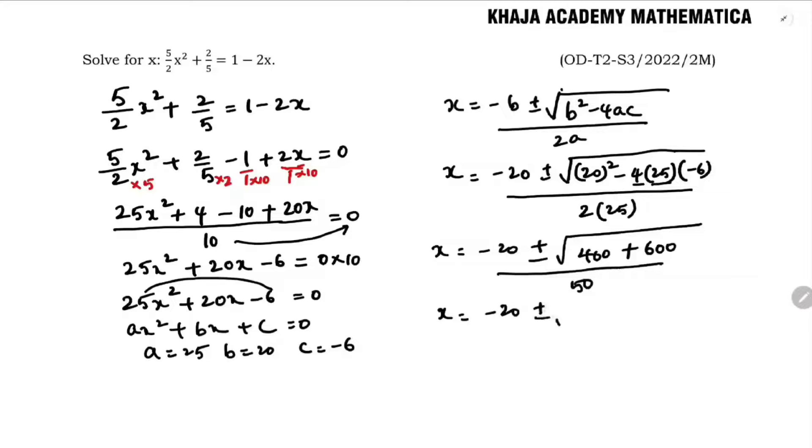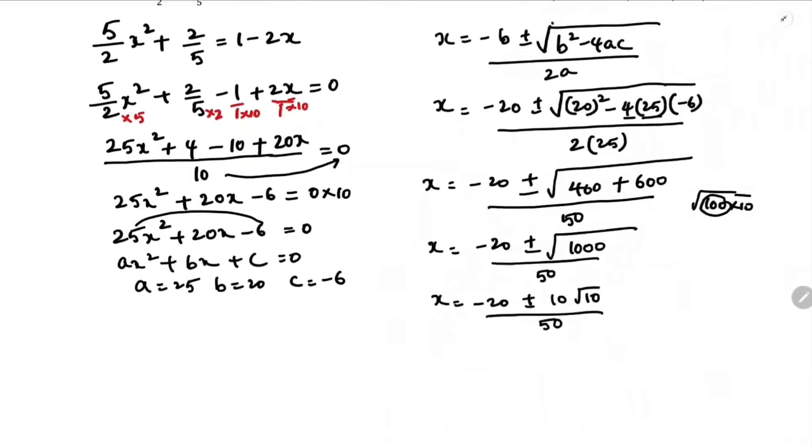-20 ± ... here it is 1000 by 50. So x = -20 ± ... See, root 1000 you can write as 100 into 10. When root 100 is 10, 10√10 by 50.